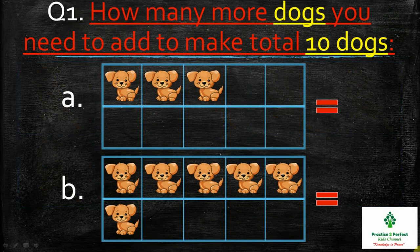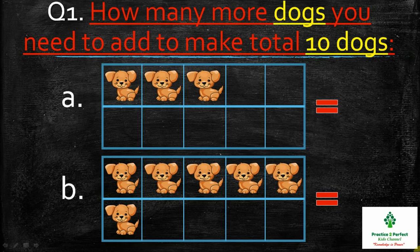Question 1: Here you have to figure out how many more dogs you need to add so that you get a total of 10 dogs. So in the first question, you see there are 3 dogs in the ten frame. You have to find how many more dogs you will add to these three dogs so that you get a total of 10 dogs.